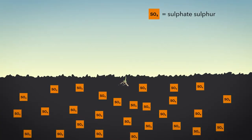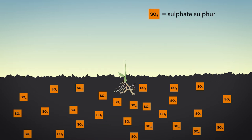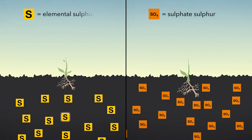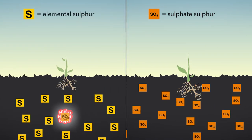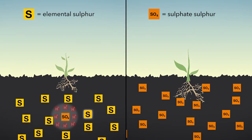Plant roots can only absorb sulfur as sulfate ion. However, various types of sulfur can be applied as a fertilizer. For example, sulfate sulfur, elemental sulfur, or gypsum are often used.